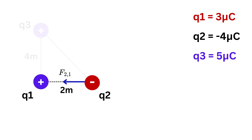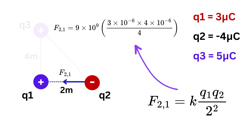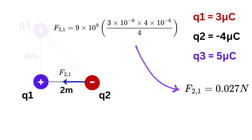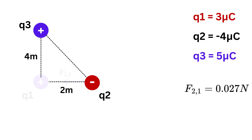Using Coulomb's Law: F(2,1) = k × |q1| × |q2| / 2², and substituting the values we get 0.027 newtons. The magnitude of F(2,1) is 0.027 N directed purely along the negative x-axis. Next we calculate the force on q2 due to q3, written as F(2,3), so we first need the straight-line distance between these two points.